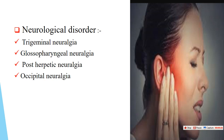We can define neuralgia as stabbing pain or shooting pain — electrical-like pain — in the course of the nerve. It can be caused by damage to the nerve itself and may cause severe pain. The causes of neuralgia include compression of the nerve by a vessel due to microvascular abnormality, or compression of the nerve by a pathological disease such as a cystic lesion or tumor.